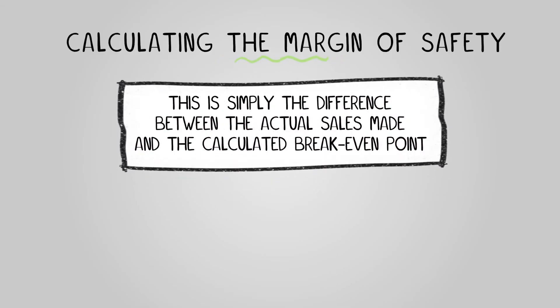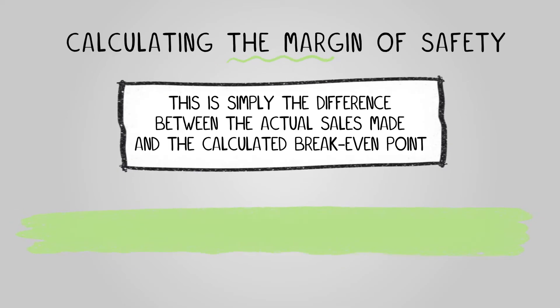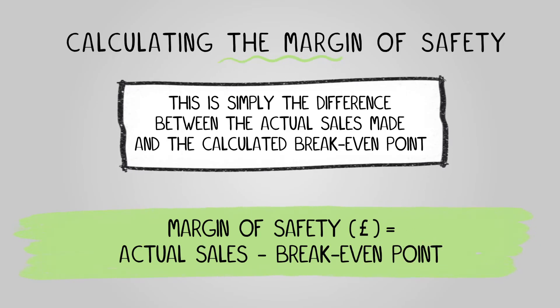This is simply the difference between the actual sales made and the calculated break-even point. As a formula, this would be: margin of safety equals actual sales minus the break-even point.